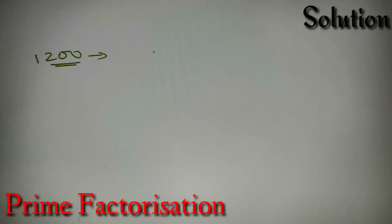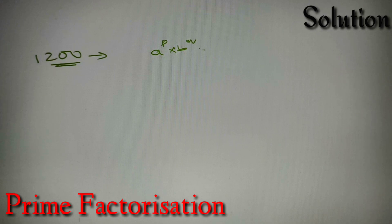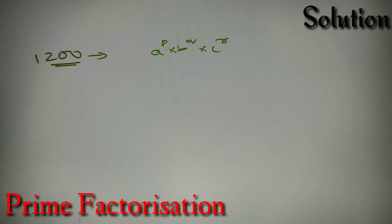So what is prime factorization? It is the representation of a number in the form of A raised to power P, multiplied by B raised to power Q, multiplied by C raised to power R, where A, B, and C are prime numbers and P, Q, and R are natural numbers.